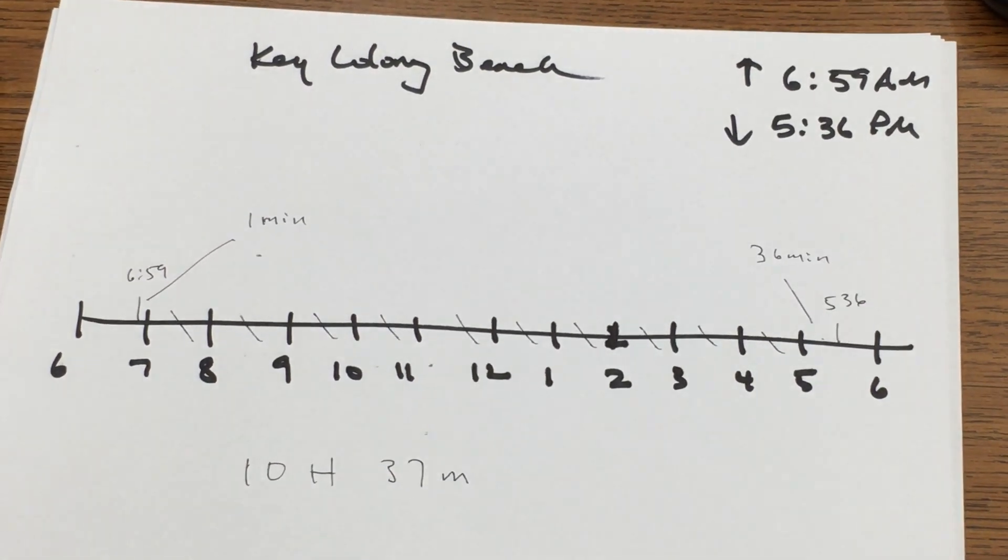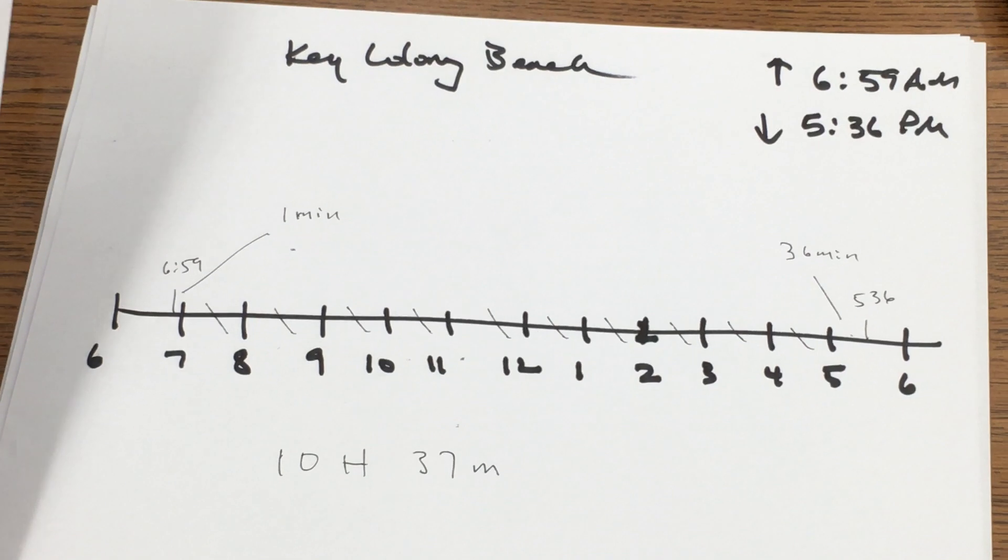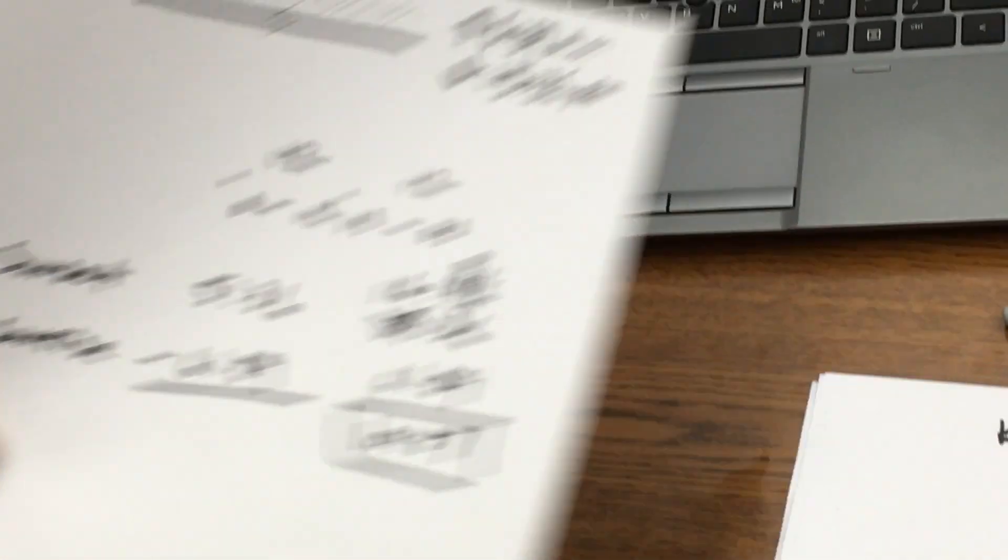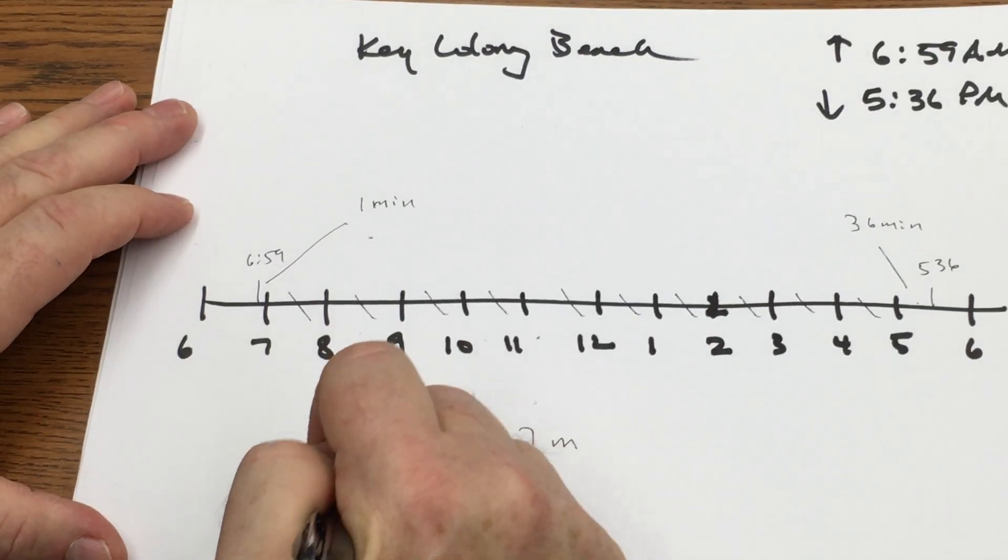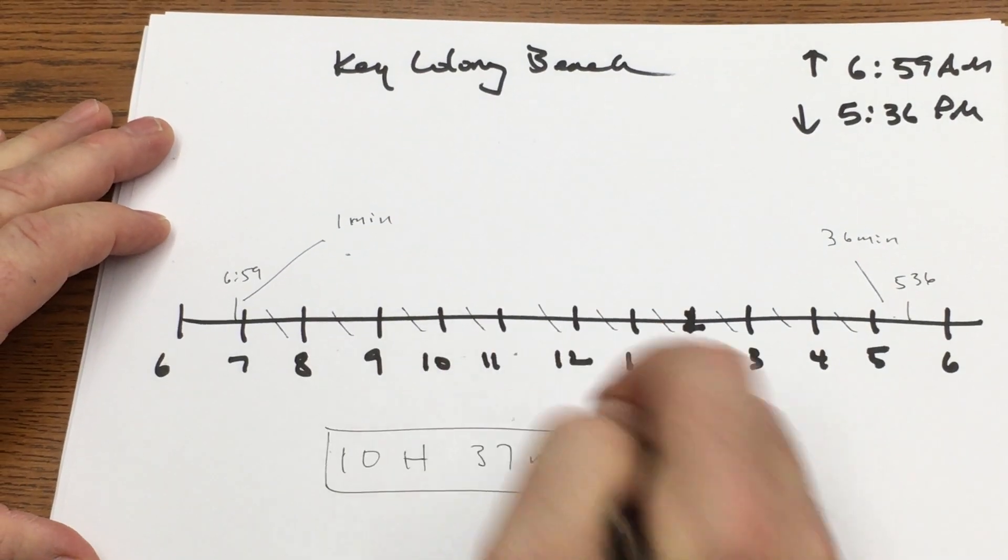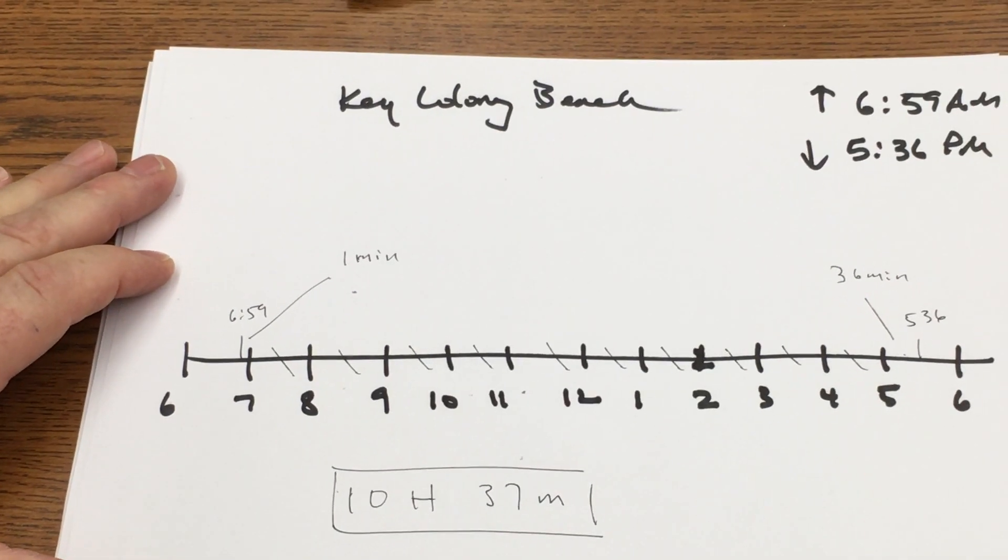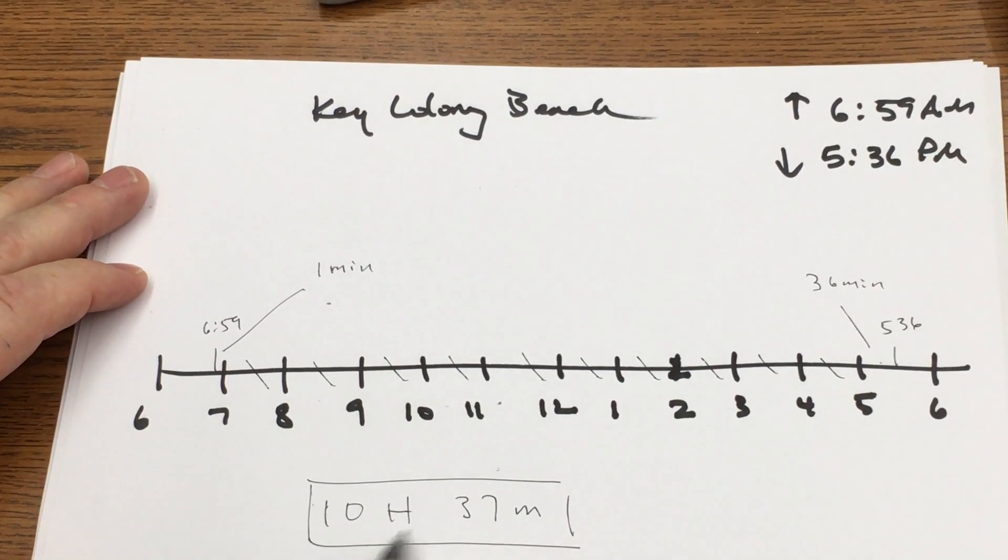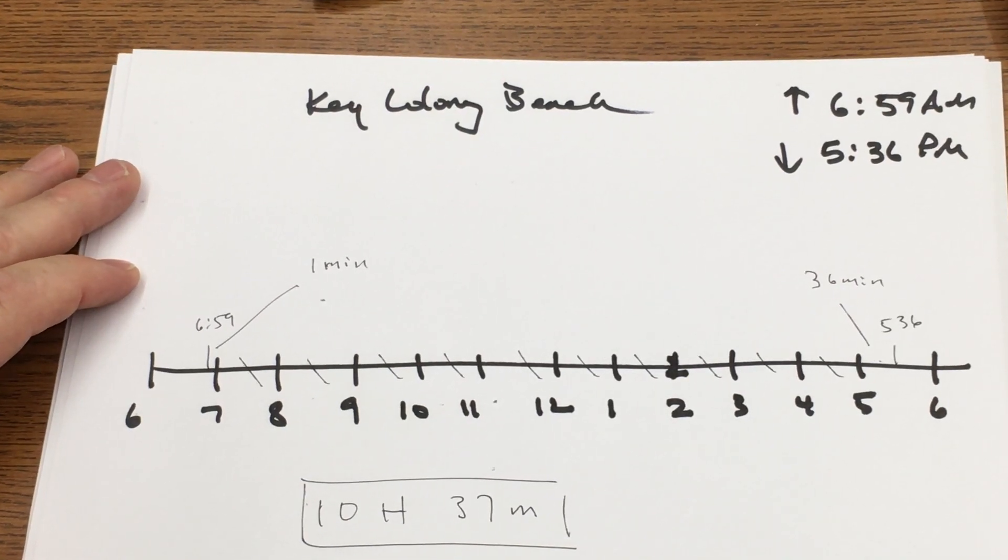Now I did the same thing the math way and that's what I ended up with. So the easiest way using a number line is that Key Colony Beach gets 10 hours and 37 minutes of daylight today. Thank you.